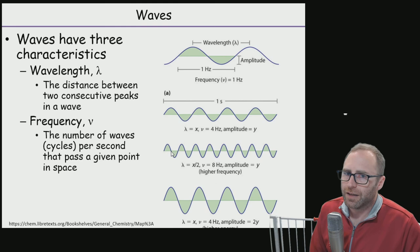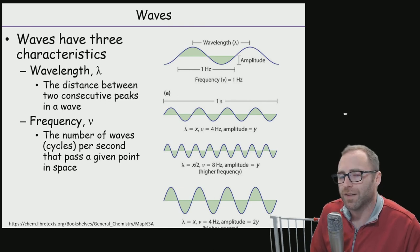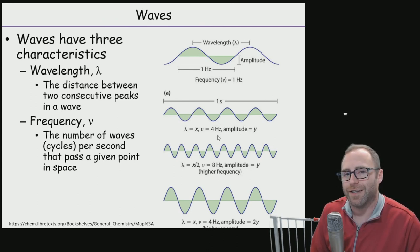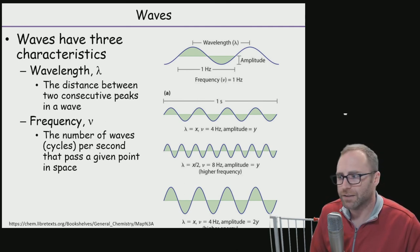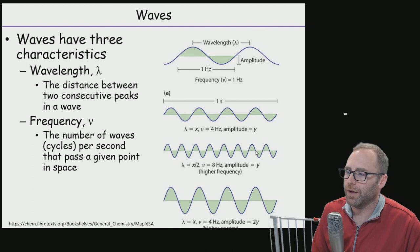So one, two, three, four waves happen during this one second interval. If we go down to the next wave, we have one, two, three, four, five, six, seven, eight waves that happen during that same one second interval. So our frequency for the top wave would be four hertz, and the wave down here below would be an eight hertz wave.